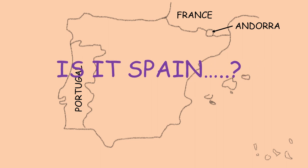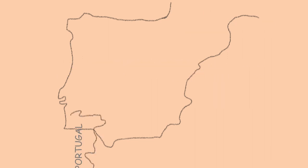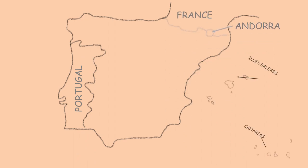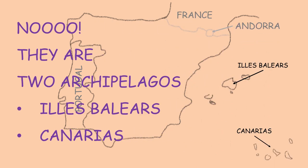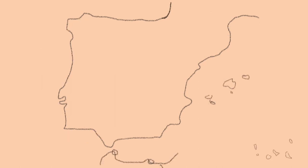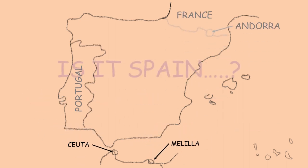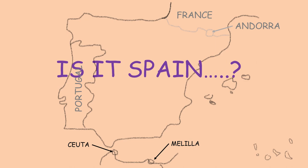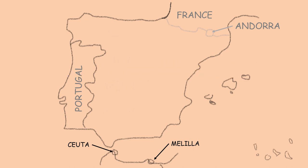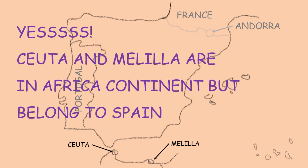Is it Spain? No, they are two archipelagos called Illes Balears and Canarias. We are going to include Ceuta and Melilla. And now, is it Spain? Yes! Ceuta and Melilla are in the African continent but belong to Spain. So now you know all the borders of Spain.